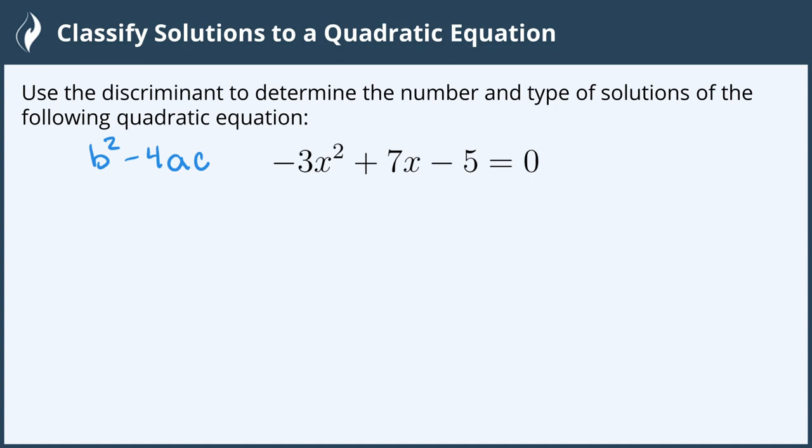That means it's going in descending order: the x² first, then the x, and then the constant term with no x. So the coefficient in front of x² is a, the coefficient in front of x is b, and the coefficient with no x is c. We can plug that into our formula to find the discriminant.